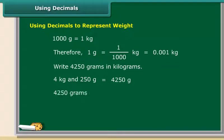Therefore, 4250 grams are equal to 4.250 kilograms.